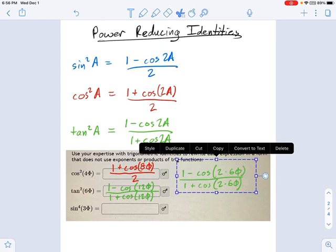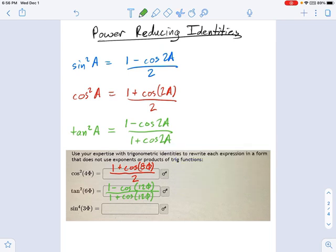The last one in this problem is maybe not quite so straightforward, but I think we can work through it. It's sine to the fourth. So how do we do a power reduction on sine to the fourth? We only have power reduction identities using sine squared and so on.